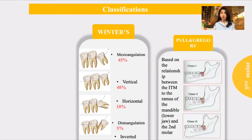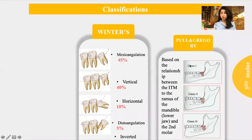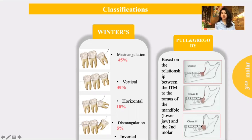For the Pell and Gregory classification, it classifies the impacted lower third molar according to its relationship with the ramus of the mandible and the lower second molar. It is class one if the impacted third molar was at the occlusal plane of the lower second molar, class two if it was between the occlusal plane and the cervical line, and class three if it was below the cervical line of the second molar.